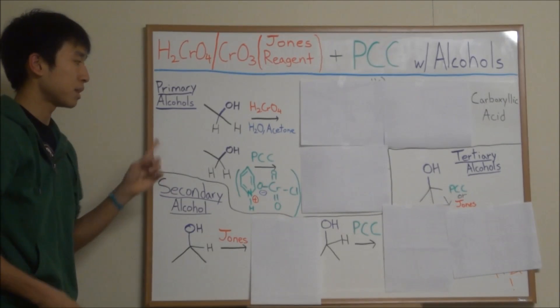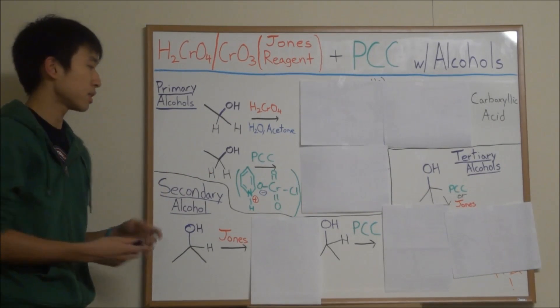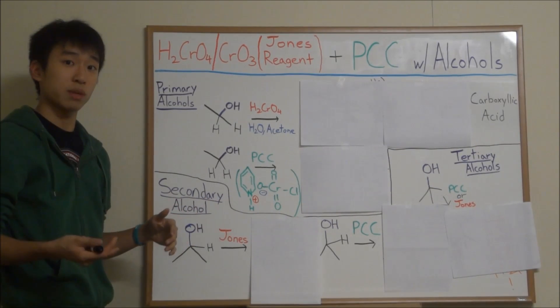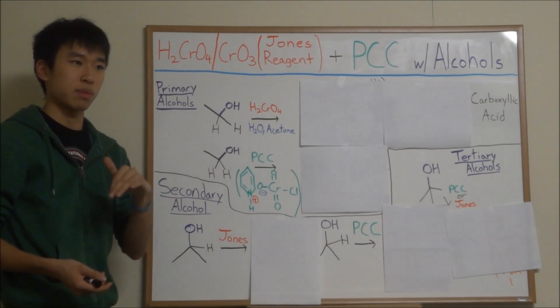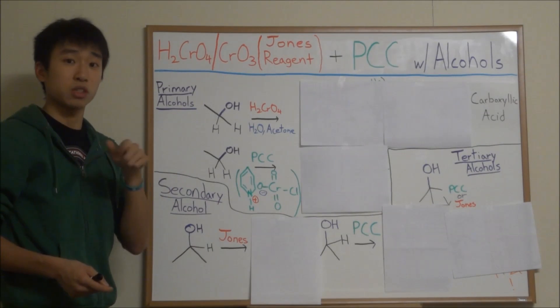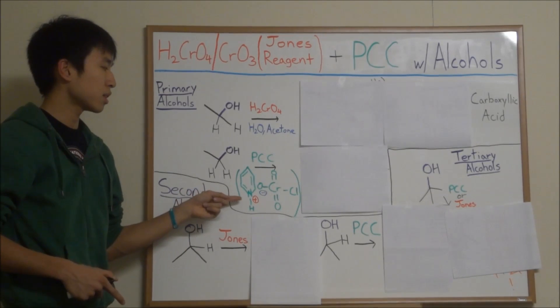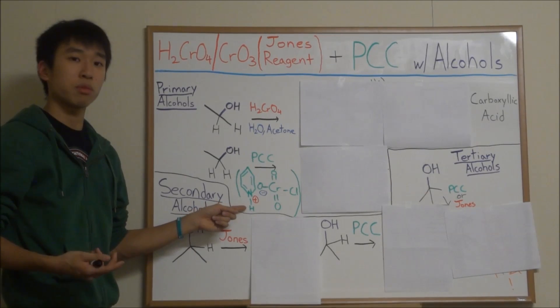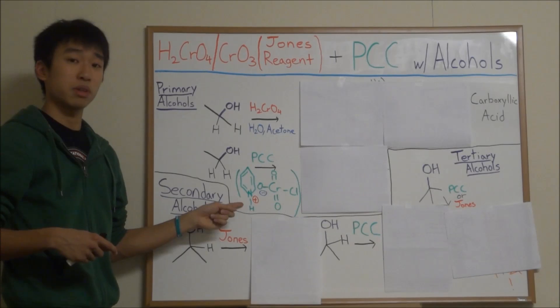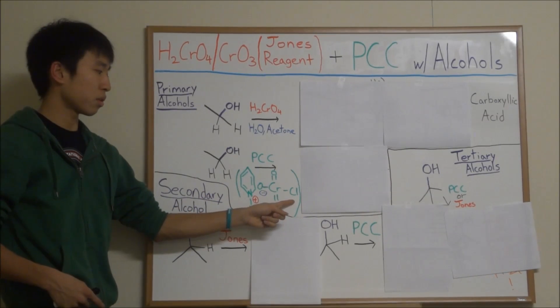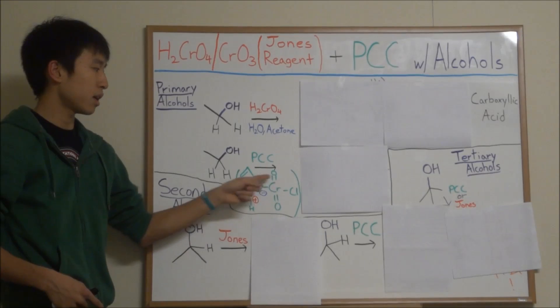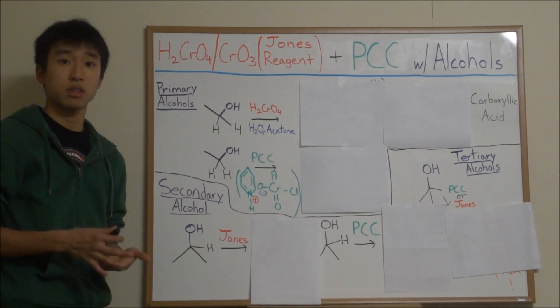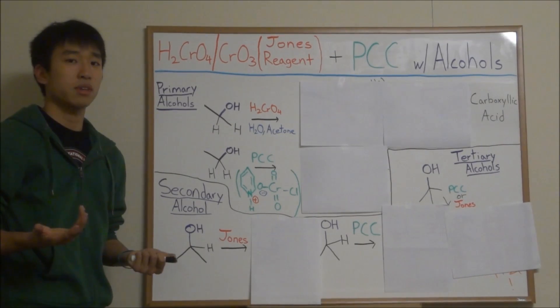PCC is called PCC because it is pyridinium, so that's basically kind of like hydronium. When water gets a hydrogen molecule, it becomes H3O and gets that -ium ending. You guys have probably seen pyridine before in other reactions, it's a pretty good base. This is the form of pyridine after it gets a hydrogen. So that's why it's pyridinium, chloro for the chlorine, and then chromate because of this part.